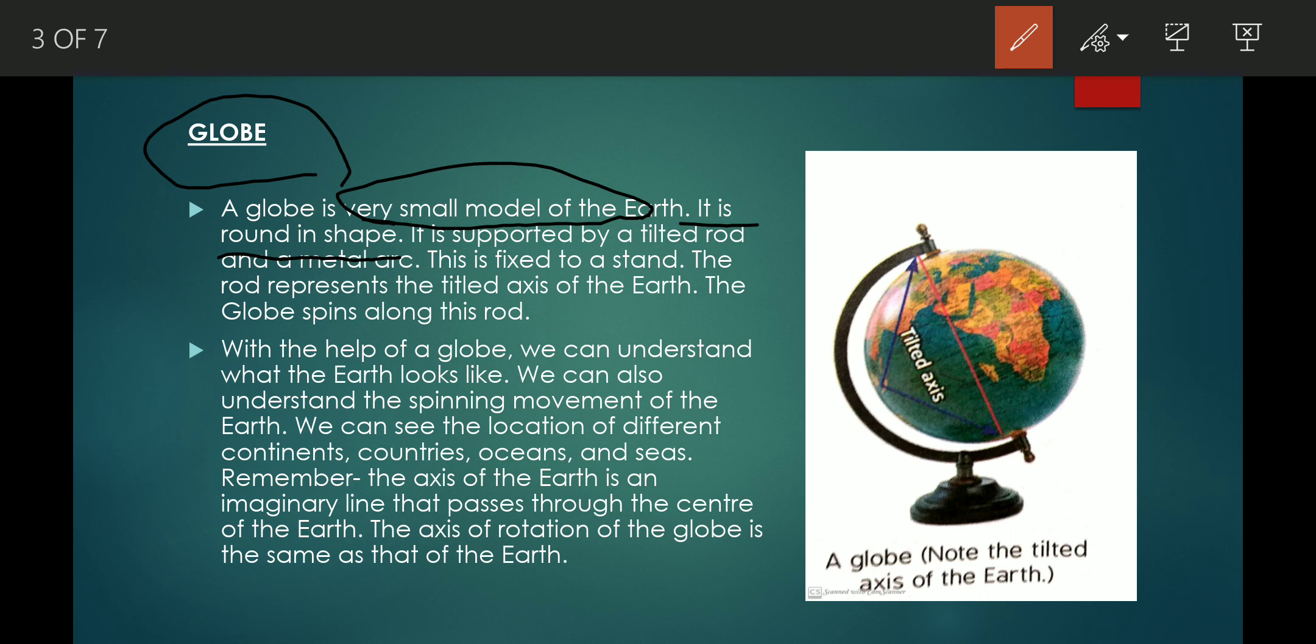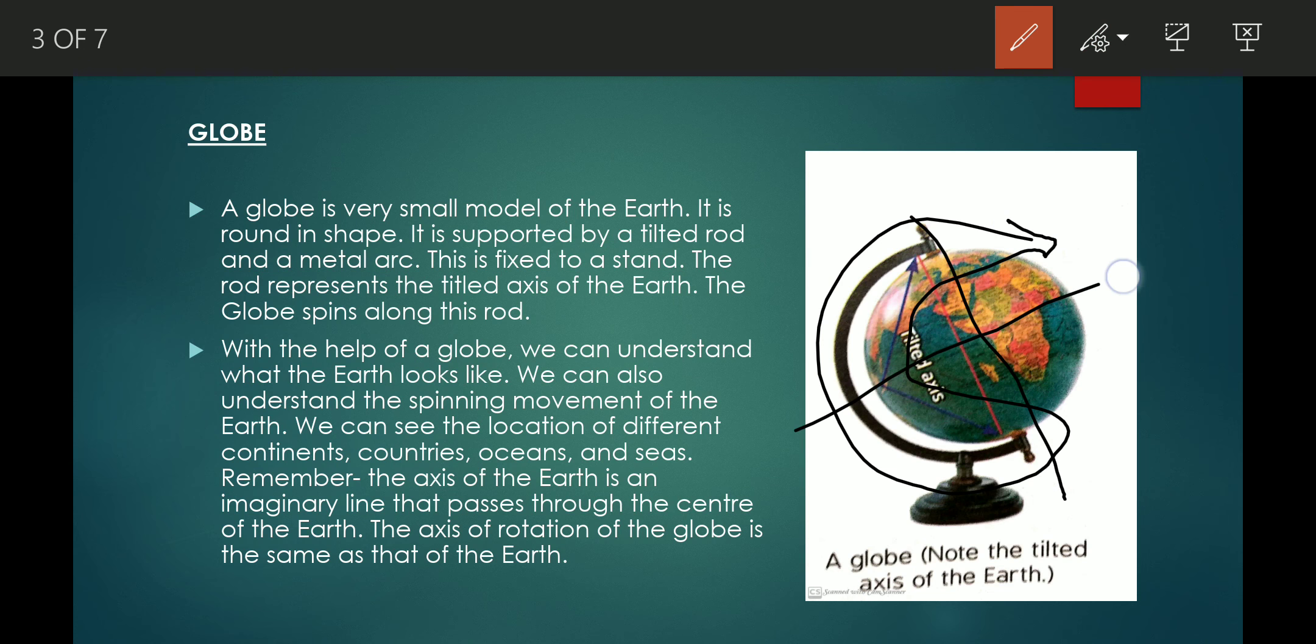It is supported by a tilted rod and a metal arc. This is fixed to a stand. The rod represents the tilted axis of the earth. The globe spins along this rod.